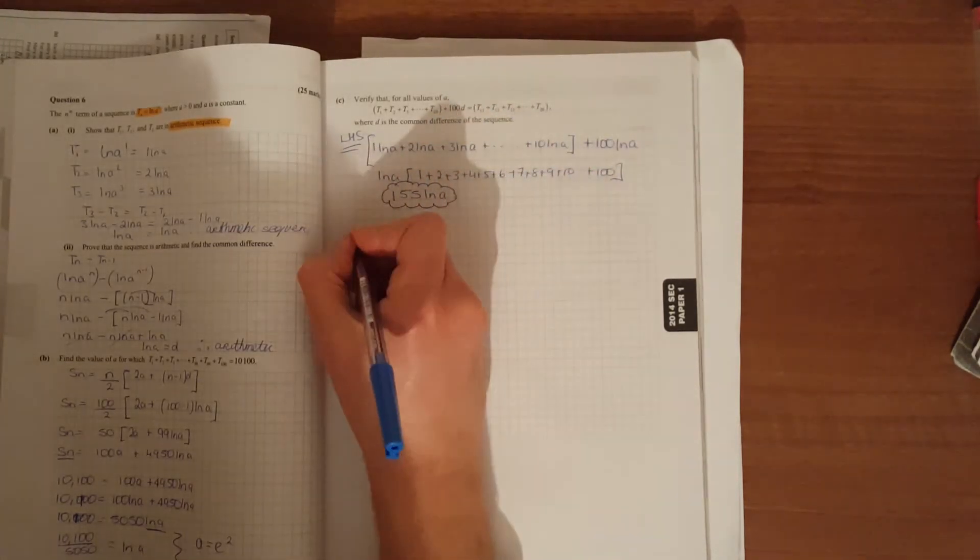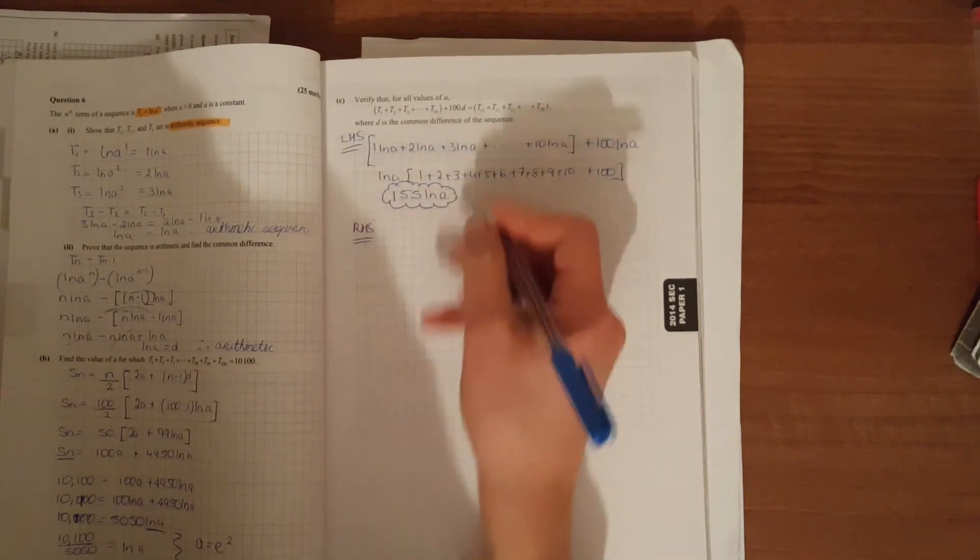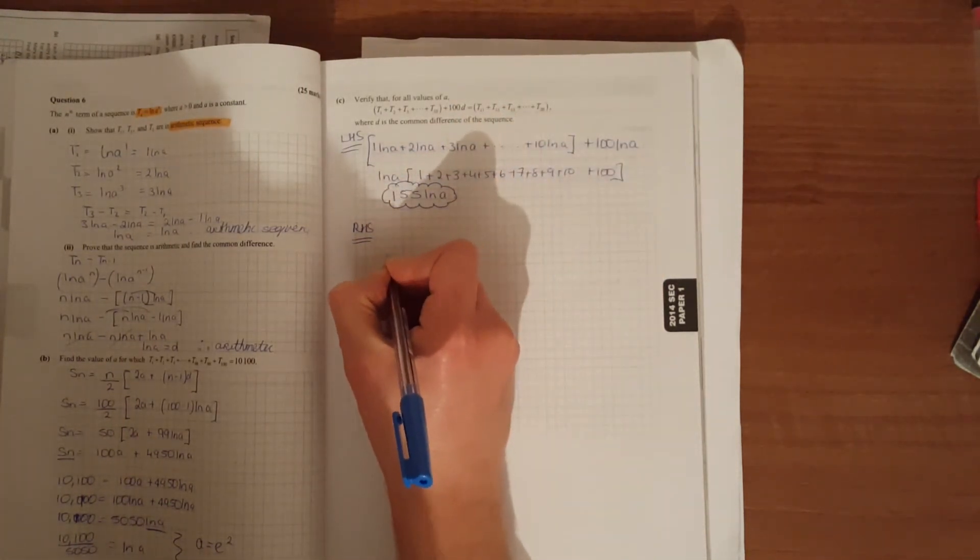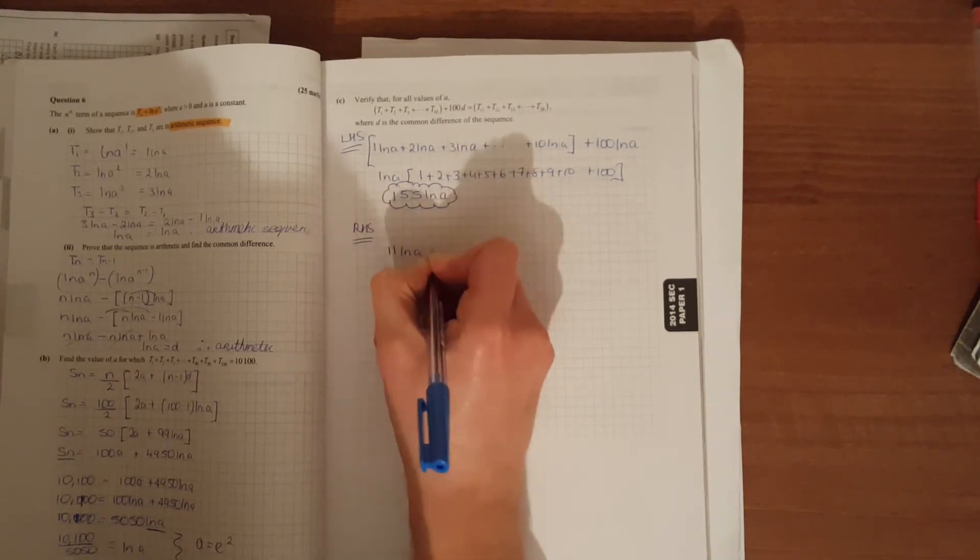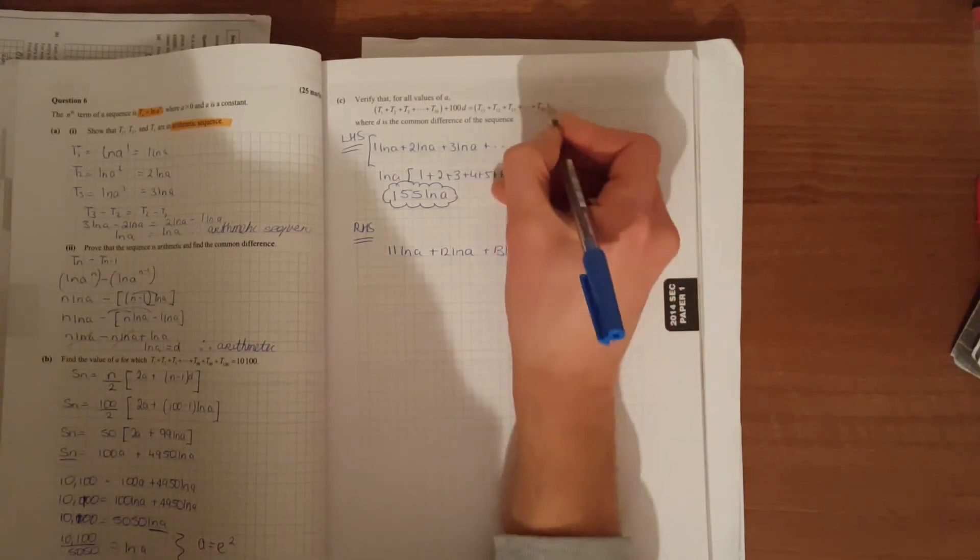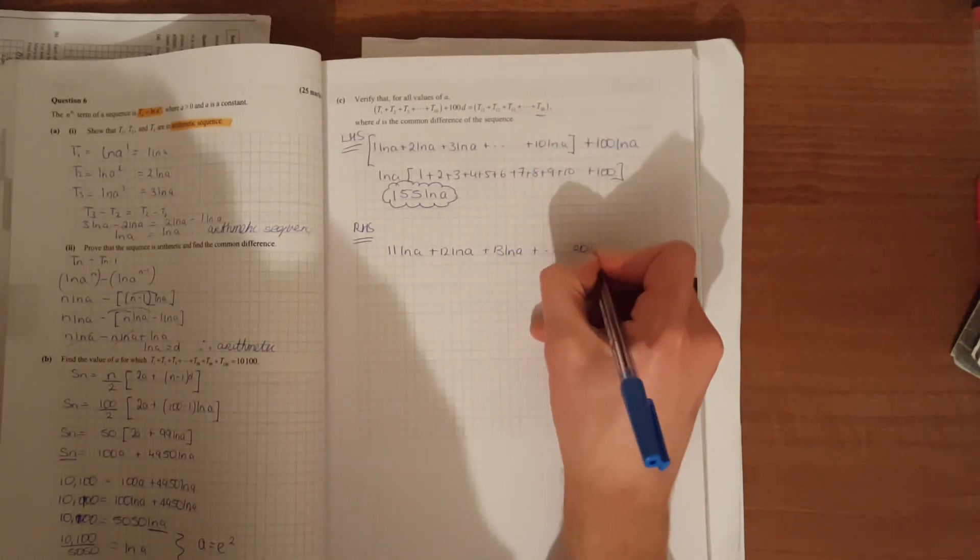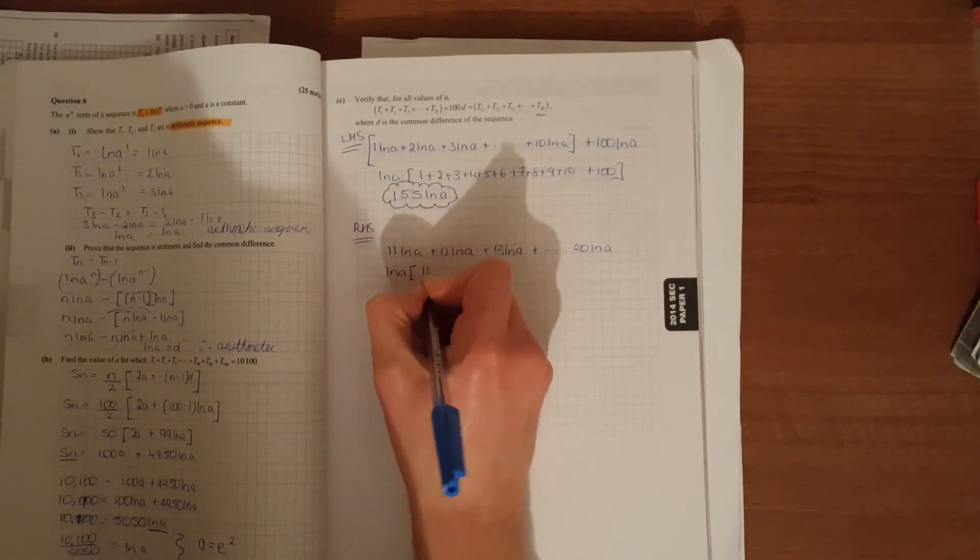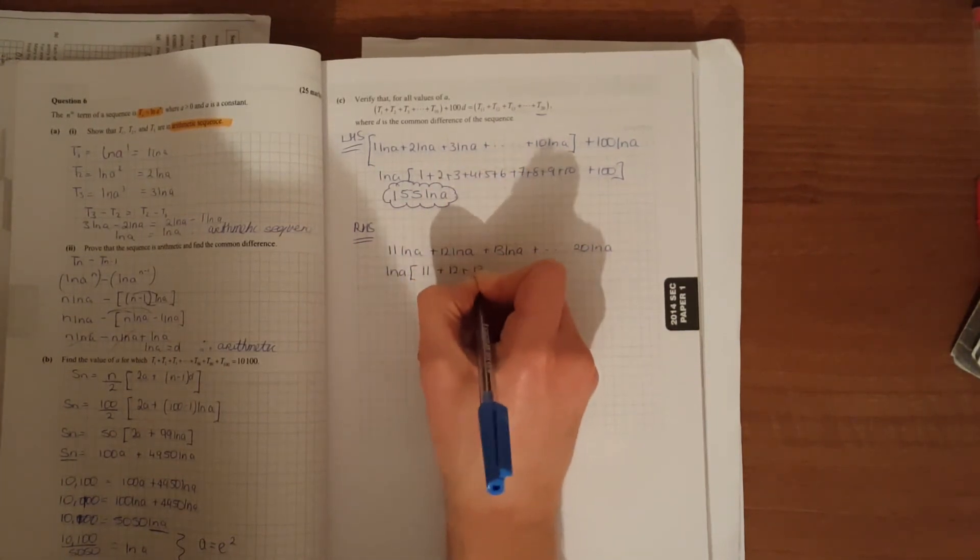For the right-hand side, which should be the same, we're going from t11 to t20. So the same thing: 11·ln(a) + 12·ln(a) all the way up to 20·ln(a). Take out the ln(a) and simply add on your terms.